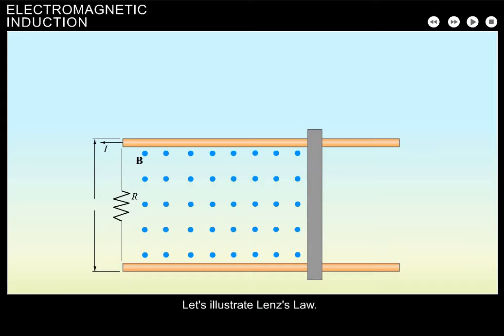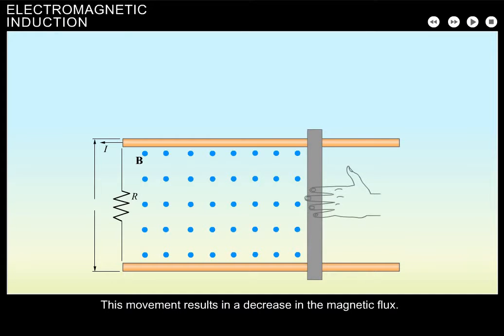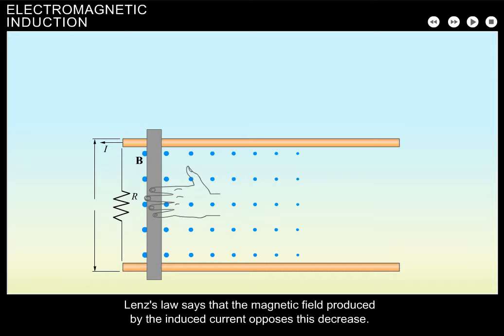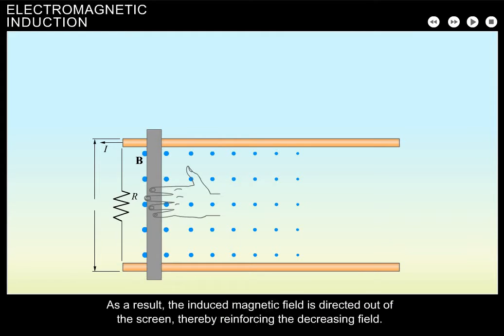Let's illustrate Lenz's Law. Suppose that a movable bar is pushed to the left. This movement results in a decrease in the magnetic flux. Lenz's Law says that the magnetic field produced by the induced current opposes this decrease. As a result, the induced magnetic field is directed out of the screen, thereby reinforcing the decreasing field.